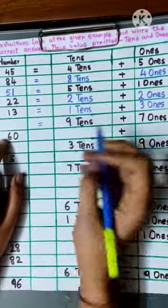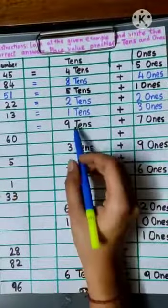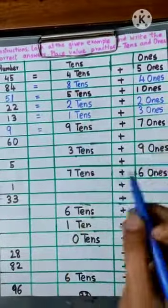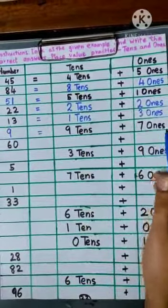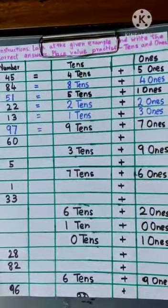Now, here there are 9 tens and 7 ones. 9 tens means the first number would be 9, and 7 ones means after 9 you have to write 7. So the number would be 97.